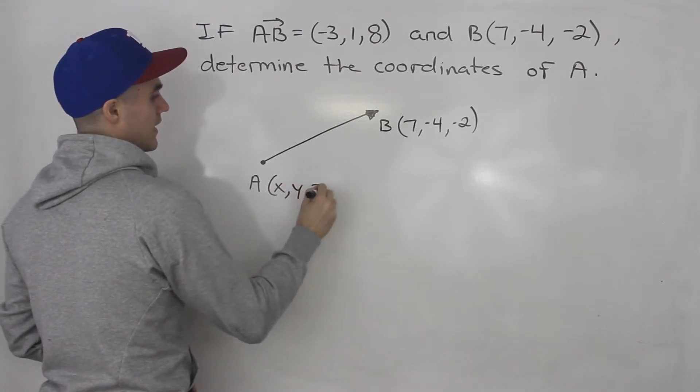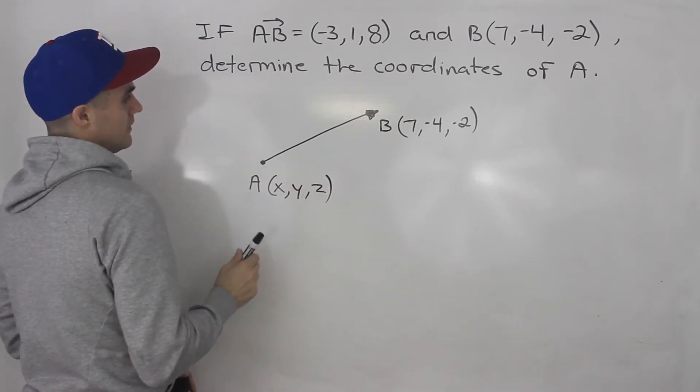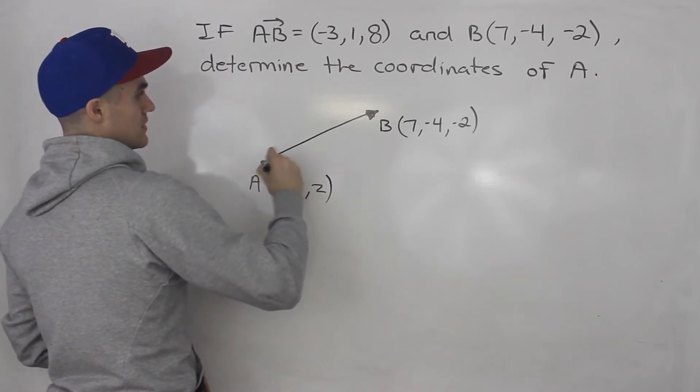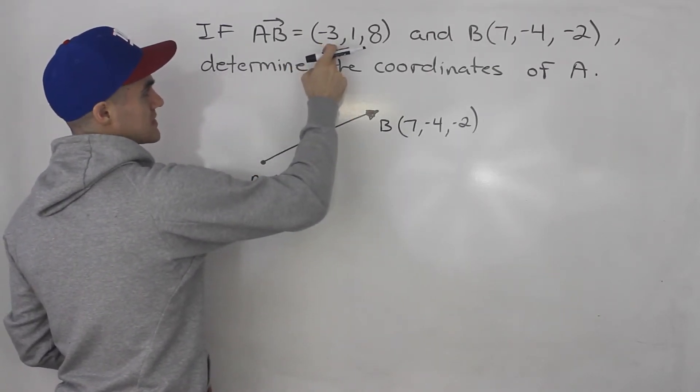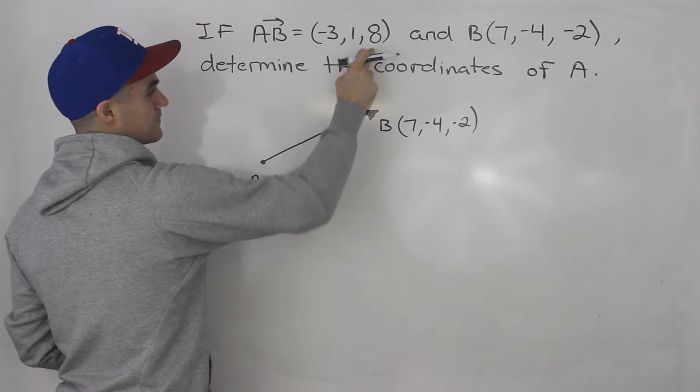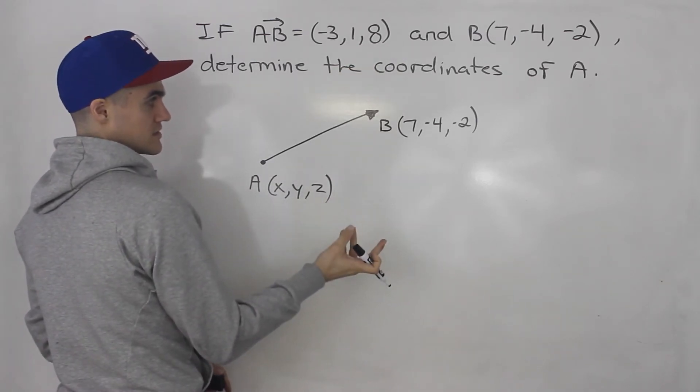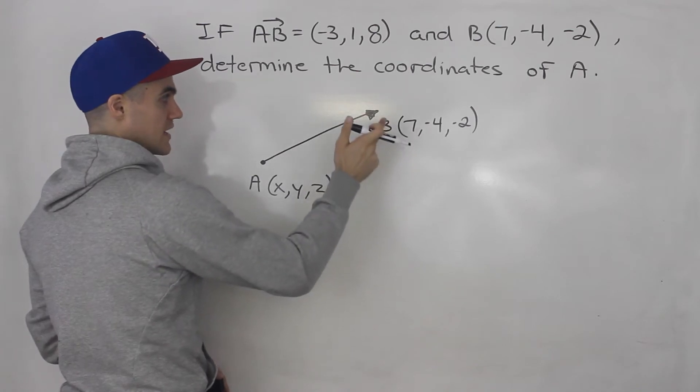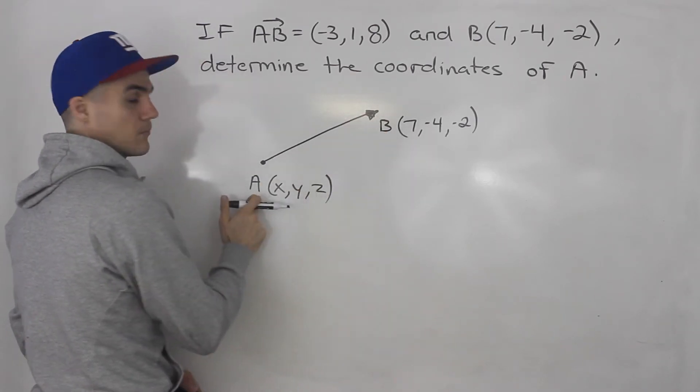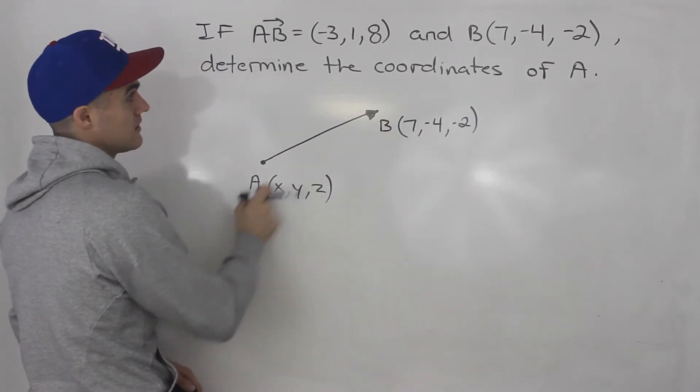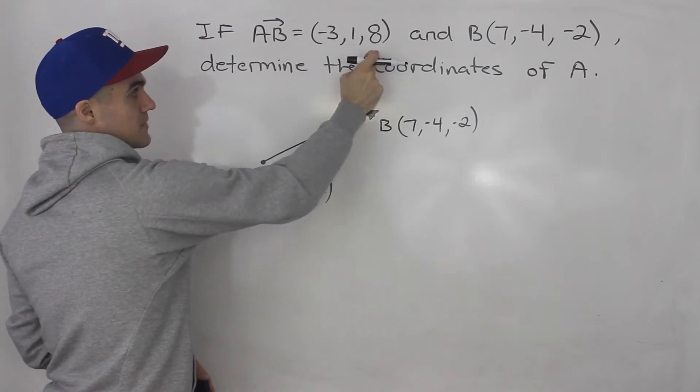So we can just label that x, y, z. And then notice that this vector in component form is (-3, 1, 8). And what that means is that the difference in the coordinates, so if we take the coordinates of vector B minus the coordinates of vector A, that's going to give us these respective components.